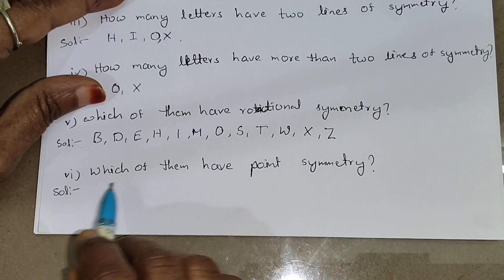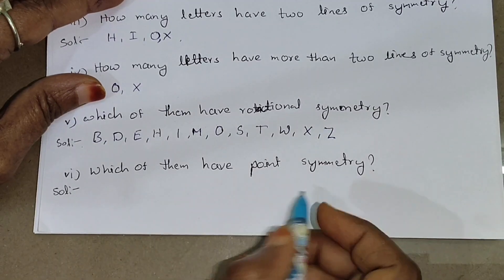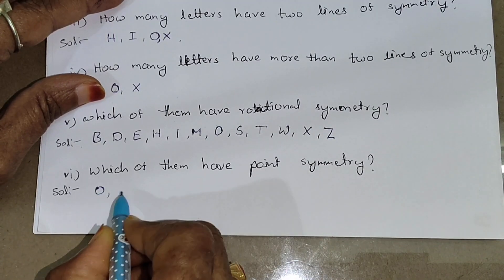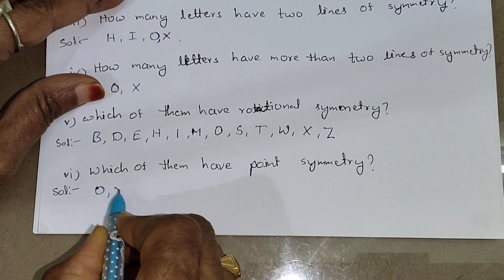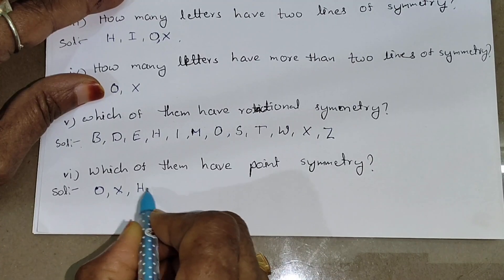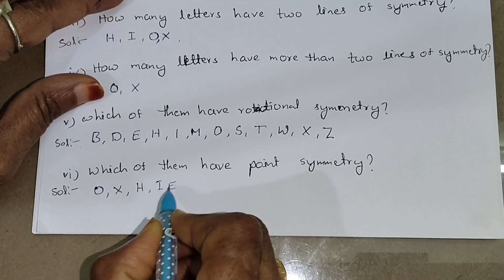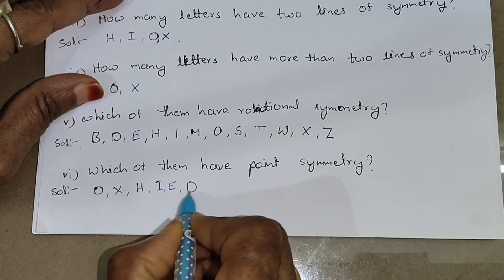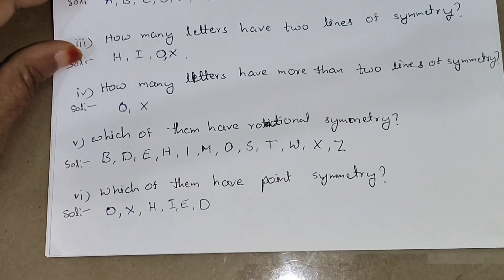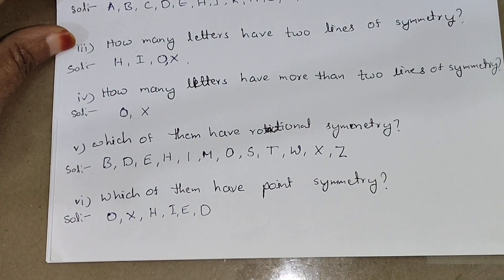Sixth question: which letters have point symmetry? The letters O, X, H, I, E, D have point symmetry. These letters are the answer for point symmetry. This completes the first question.